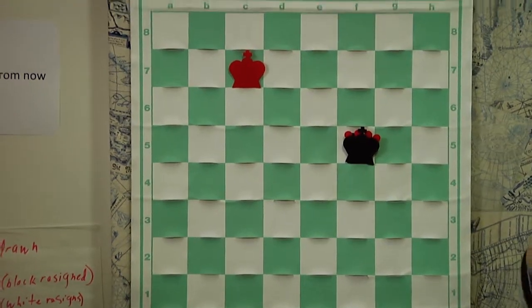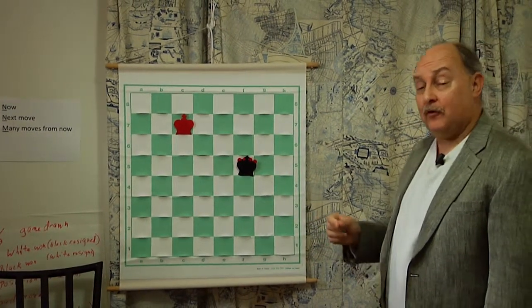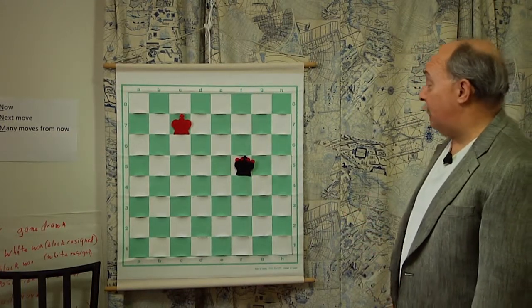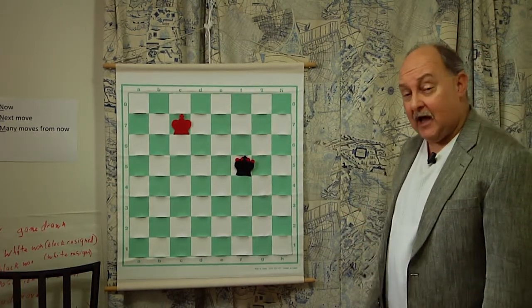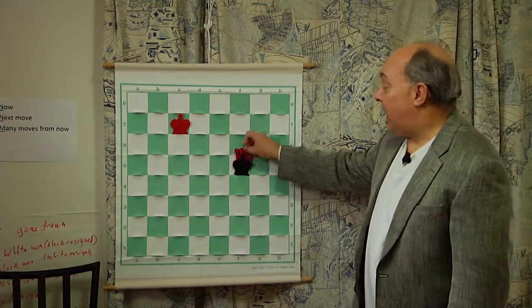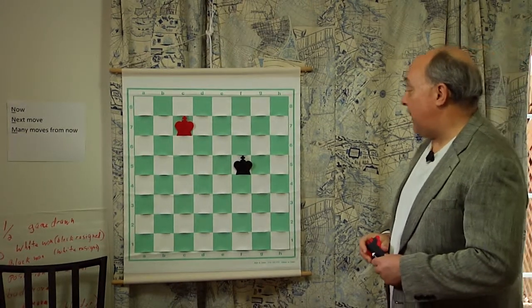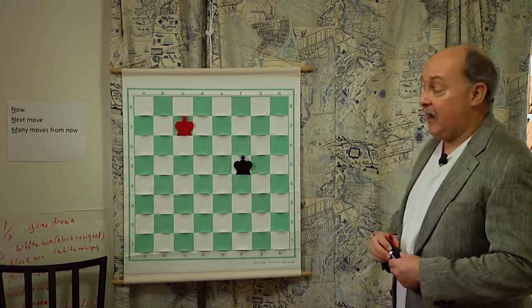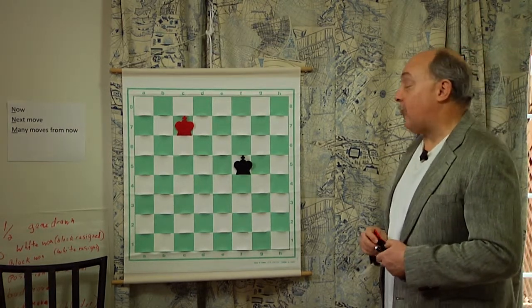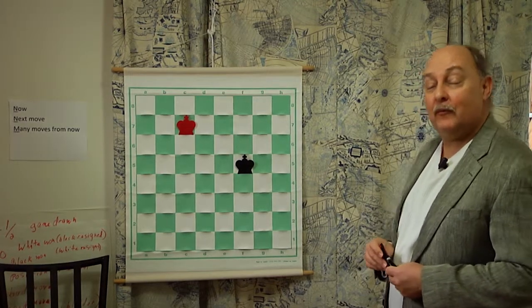So the five draws are draw by offering your opponent a draw, which is something you do after you have moved first, by the way. Draw by the 50 move rule. That's 50 moves by both sides without a pawn move or a piece being captured. Draw by not enough pieces to checkmate. Draw by stalemate when your king is not in check and none of your pieces can move, not just your king, none of your pieces can move, and draw by repeating the same position three times, known as a three-fold repetition.